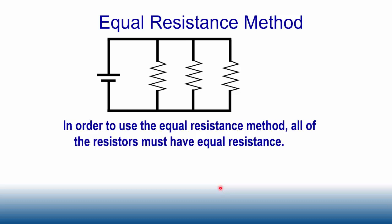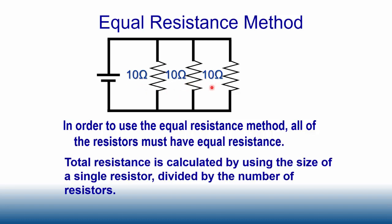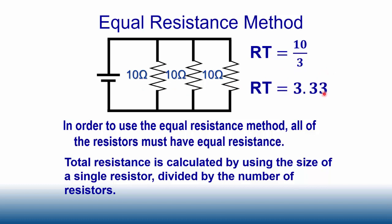The equal resistance method only works if you have equal resistors. Here I have 10 ohms, 10 ohms, and 10 ohms. Many people assume the total resistance is 10 ohms, but that's not true — it's 3.33 ohms. Using the equal resistance method, you take the resistance of a single resistor and divide by the number of resistors: 10 divided by 3 equals 3.33 ohms.